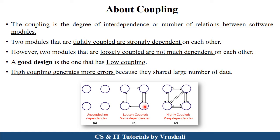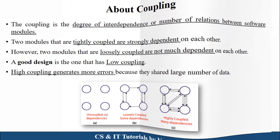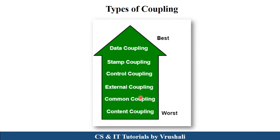In the second diagram, there are four modules and they share somewhat information or methods with each other — this is called loosely coupled, where some dependencies exist. In the third diagram, all modules are totally dependent on each other; this is called highly coupled. In software engineering, you need to generate a good design, which requires low coupling. Highly coupled design generates lots of errors and involves sharing a large amount of data, which is not useful. There are six types of coupling: data coupling is the best one, and content coupling is the worst.